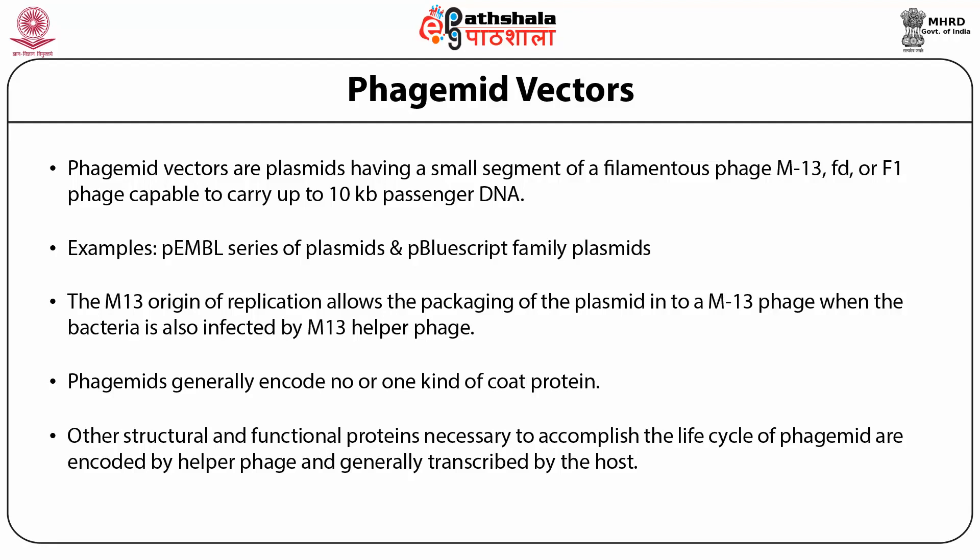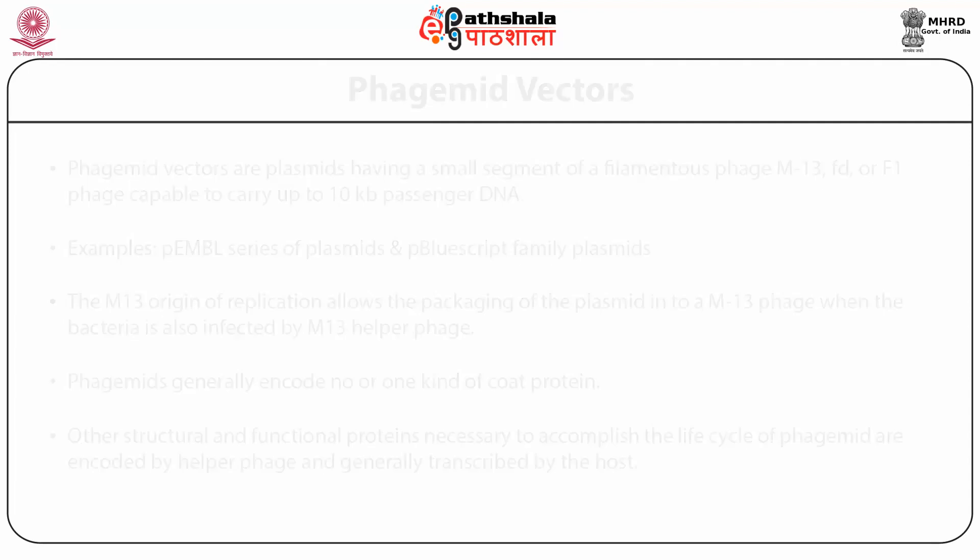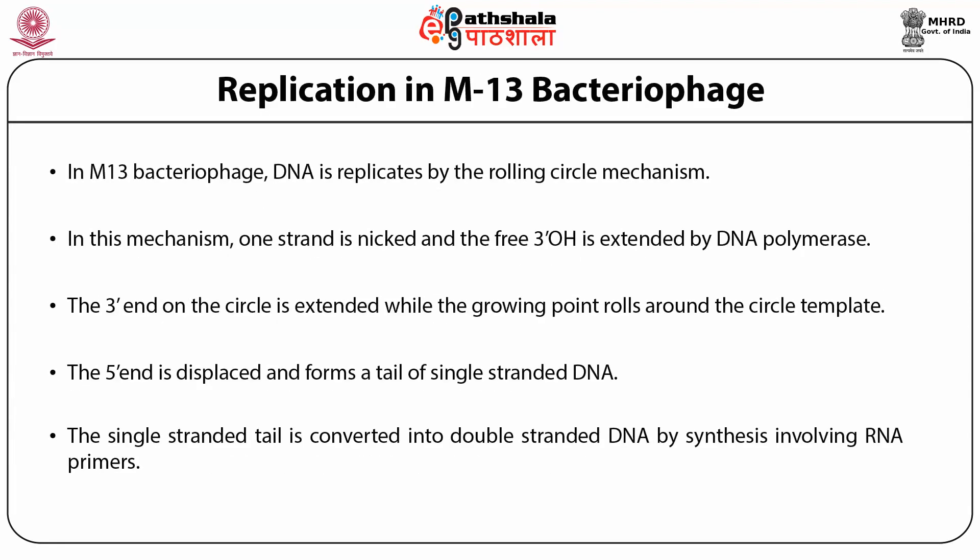Lambda-based phasmid vectors are plasmids having a small segment of filamentous phage M13, FD, or F1 phage, capable of carrying up to 10 kb of passenger DNA. Examples are the pEMBL series plasmids and pBluescript family plasmids. The M13 origin of replication allows the packaging of the plasmid into M13 phage when bacteria is also infected by a M13 helper phage. Other structural and functional proteins necessary to accomplish the life cycle of the phasmid are encoded by helper phage, generally transcribed by the host.